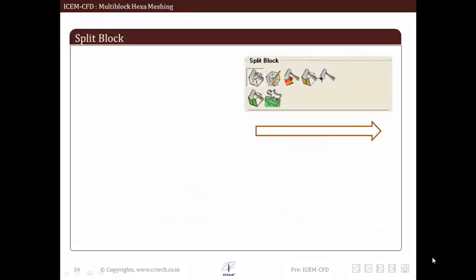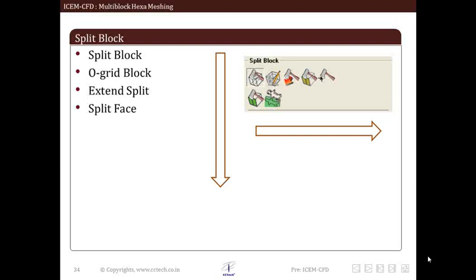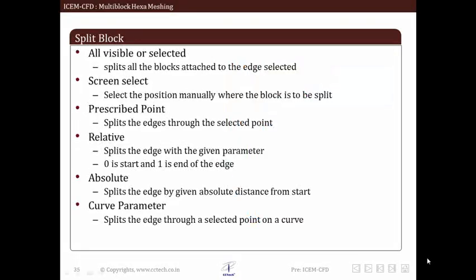Now let's move on to splitting operations and blocking. We are going to explore in detail various options available to split blocking. The following is a list of operations in blocking functional tab as we proceed from left to right: Split block, O-grid block, Extend split, Split vertices, Split unstructured face, Imprint free space.